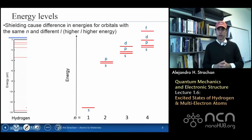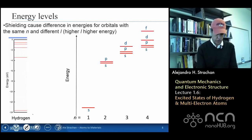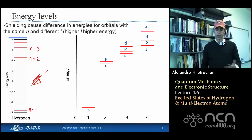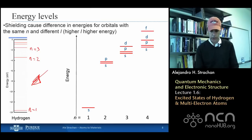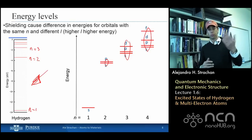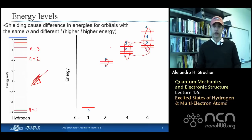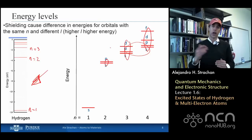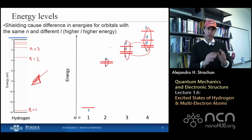This slide shows how the levels split up. On the left is hydrogen — all the n equals 2 states are degenerate, all the n equals 3 states are degenerate. In multi-electron systems on the right, the 2s and 2p split; the 3s, 3p, and 3d also split; and the 4s, 4p, 4d, and 4f also split. Between the third and fourth shells, the shells start crossing, so things get more complicated. The take-home message is: within a shell, the higher the angular momentum, the higher the energy — due to shielding of the nuclear potential by inner core electrons.